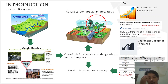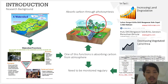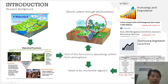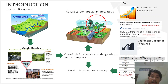Green vegetated areas in the watershed — such as forest areas, agriculture areas, and shrub areas spread throughout the watershed, especially in upper areas — can absorb carbon from the atmosphere through photosynthesis. This contributes to mitigating the risk of global warming. However, watershed functions are threatened by two phenomena: decreasing vegetated land area and increasing land degradation.